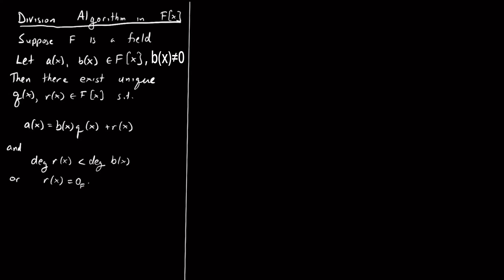You can compare this to the division algorithm in Z — it had the same form: a = bq + r, and q and r were unique. But instead of requiring the degree of r to be less than the degree of b, we simply said r is less than b.